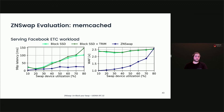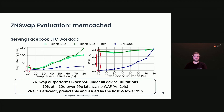We also evaluated Memcached serving Facebook's ETC workload. In this experiment, we utilized the entire 512 gigabytes of memory available to the system and increased the memory footprint to utilize a swap device. The y-axis on the left graph is the 99th percentile latency of served requests, and on the right is the write amplification. As before, ZNSwap outperforms the traditional SSD with and without trims. At 10% device utilization, ZNSwap has 10 times lower 99th percentile latency and a 2.4 times lower write amplification, all due to a more efficient and predictable host-side garbage collector.